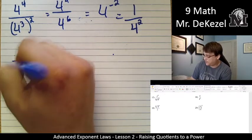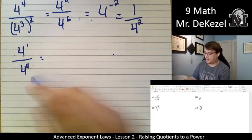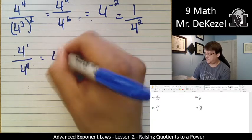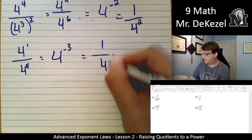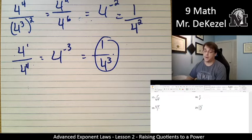We've got 4 over 4 to the power of 4 next. This one will be straightforward. 1 minus 4 is minus 3. We flip it over. 1 over 4 to the power of 3.